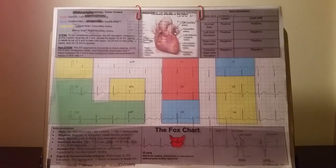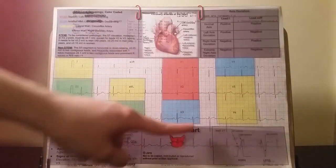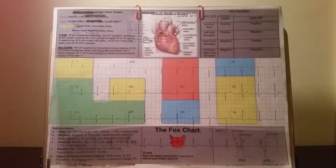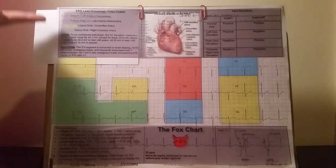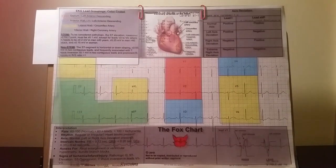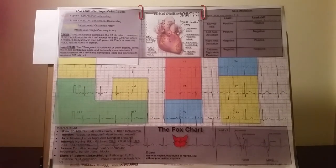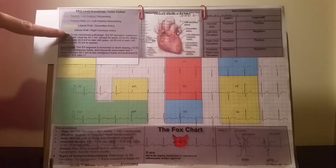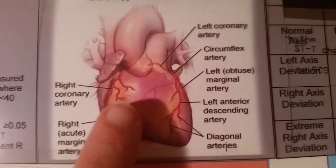Using ST segment changes as an example, if there are two or more ST segment changes in two or more contiguous leads, the patient could potentially be having a myocardial infarction. The same principle applies to all other lead groupings on the FOX chart. If there are ST segment changes in leads 2, 3, and AVF, refer back to the color-coded key in the upper left-hand corner to identify which part of the heart and its correlating coronary artery is involved.